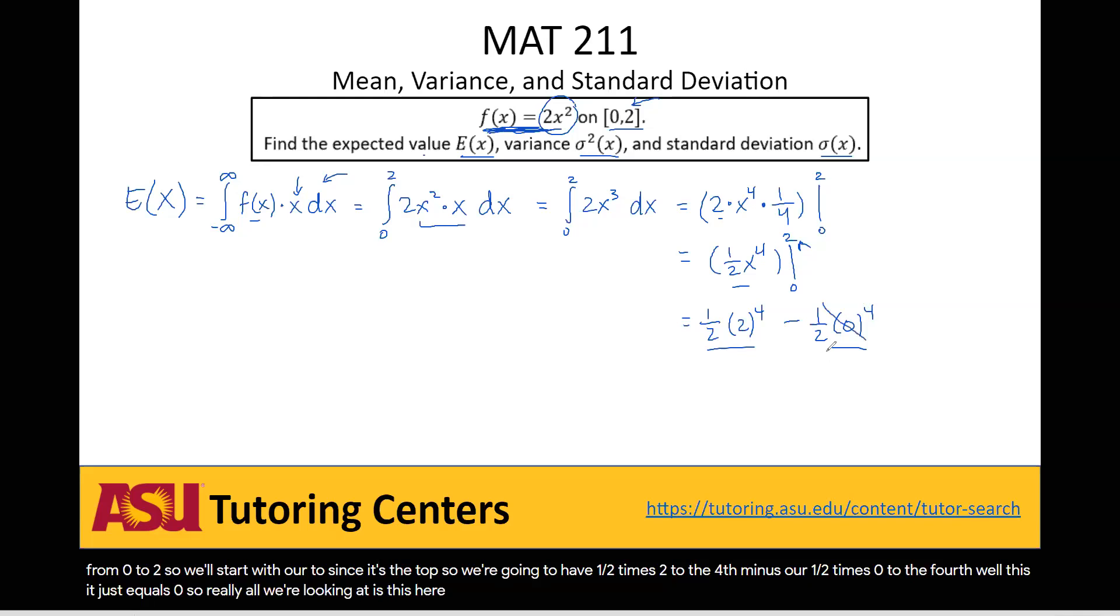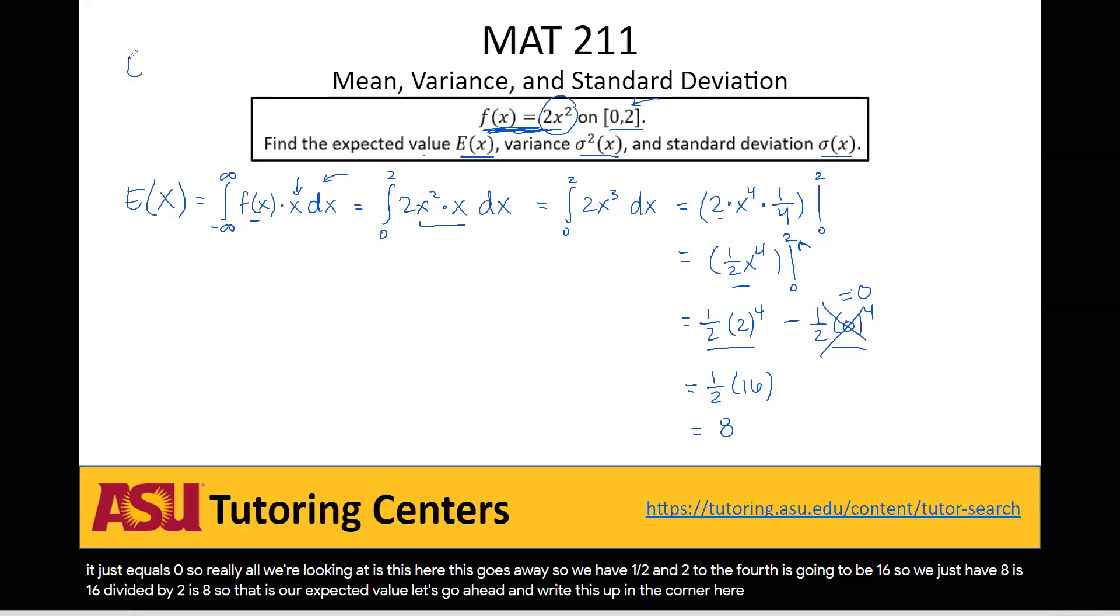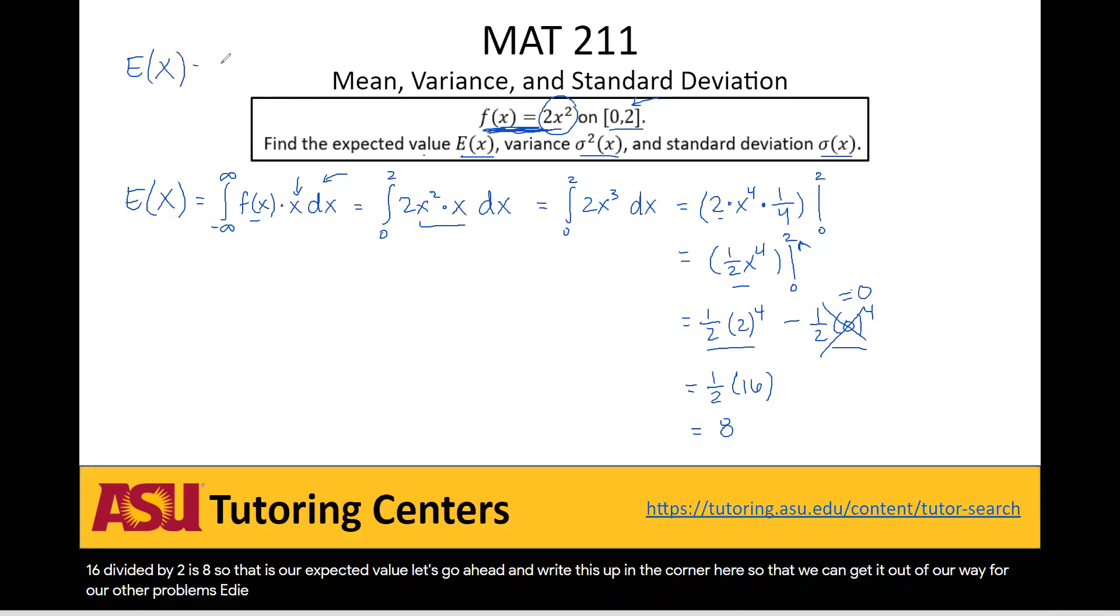So really all we're looking at is this here. So this goes away. So we have 1 half and then 2 to the fourth is going to be 16. So we just have 8 because 16 divided by 2 is 8. So that is our expected value. Let's go ahead and write this up in the corner here so that we can get it out of our way for our other problems. So E(x) equals 8.